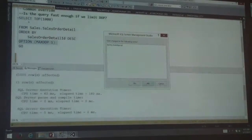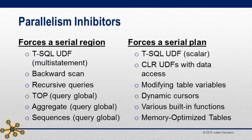Now that we've talked about that, let's discuss inhibitors. Assuming you do want a parallel plan and you're not getting one, you might want to know why. Is it a cost issue or something else? There are two types of inhibitors: things that force a serial region in your plan, and things that keep parallelism from occurring entirely. We already found one that forces a serial region — a query global TOP — which forces a serial region to occur. It's neither a good thing nor a bad thing; it just has to be processed in serial.